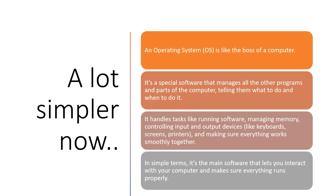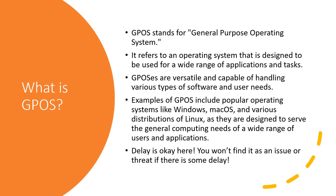A simpler definition: an operating system is like a boss for a computer. It is software that manages all the programs and parts of the computer, telling them what to do and when to do it. It handles tasks like running software, managing memory, controlling input and output like your keyboard, screen, printer or any other peripherals, and ensuring that everything works smoothly together. It is the main software that lets you interact with your computer and makes sure everything runs very smoothly.